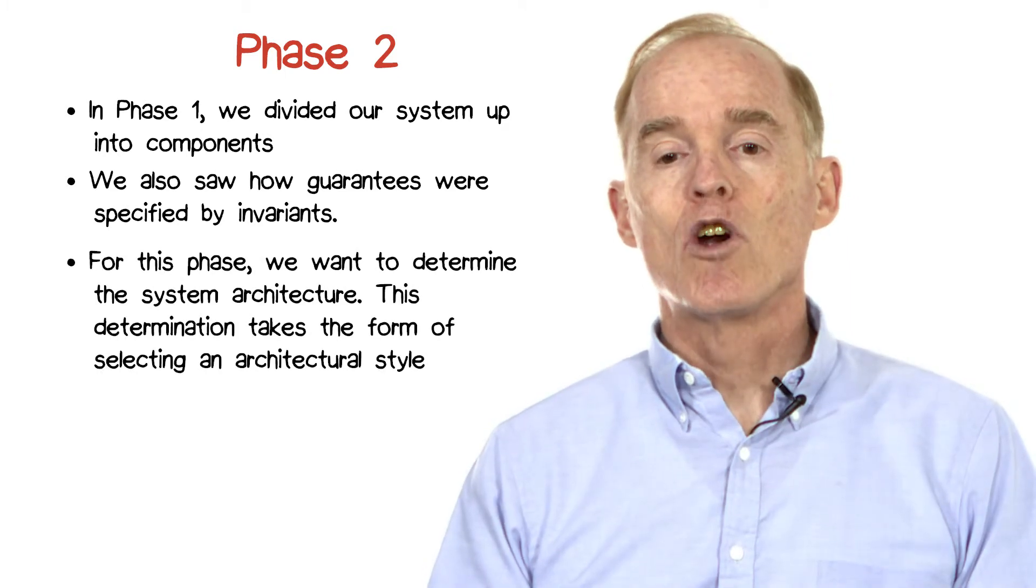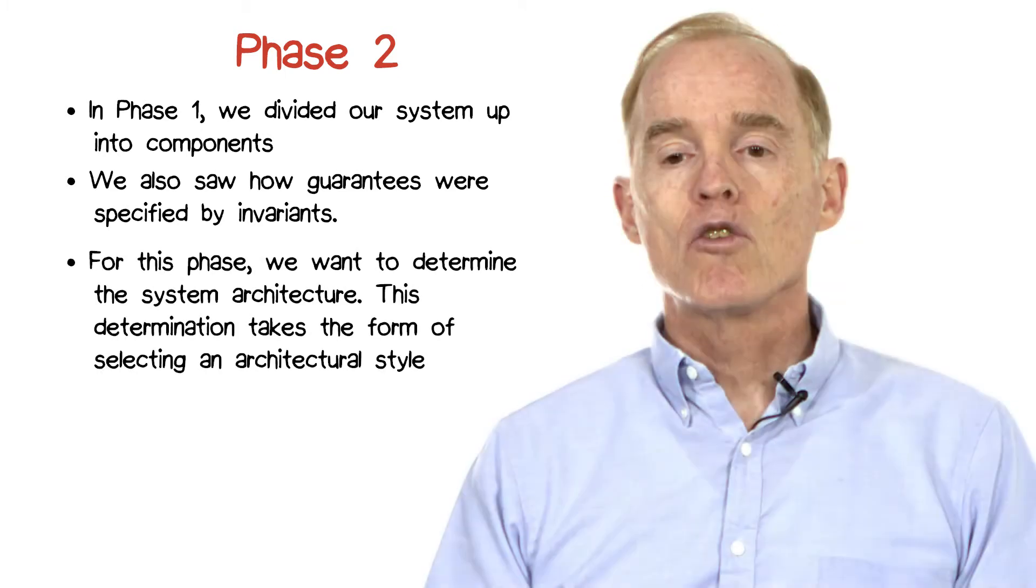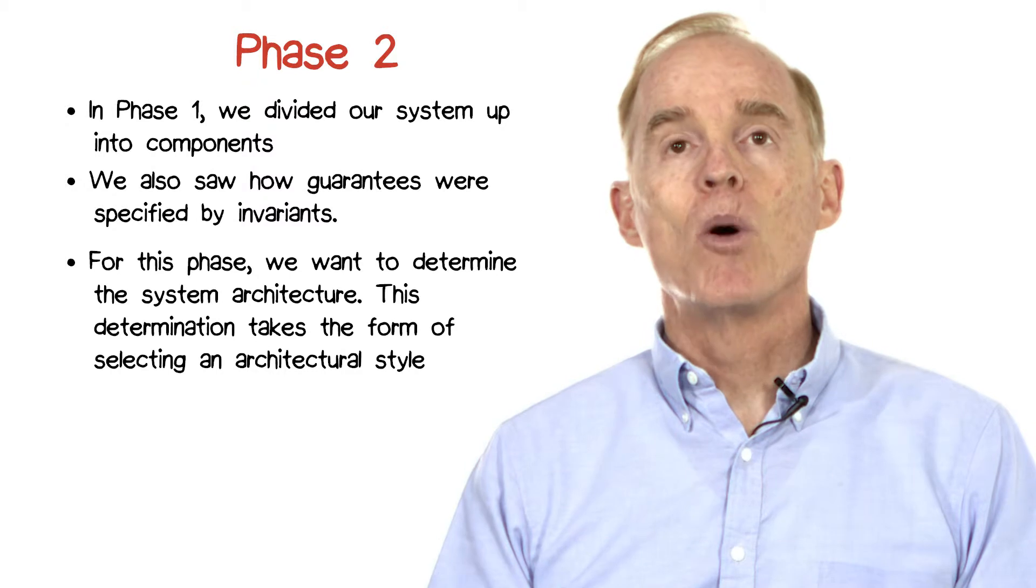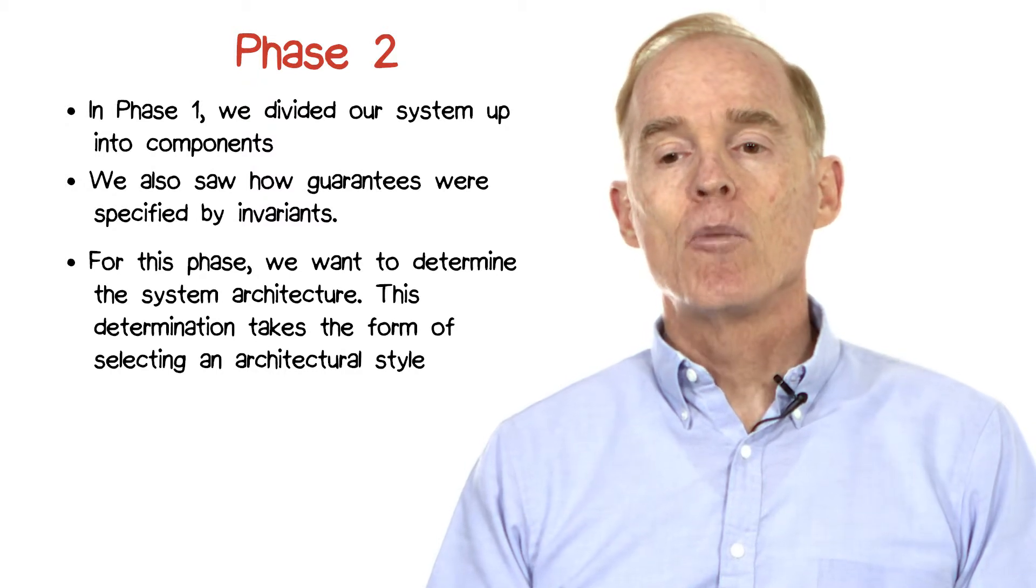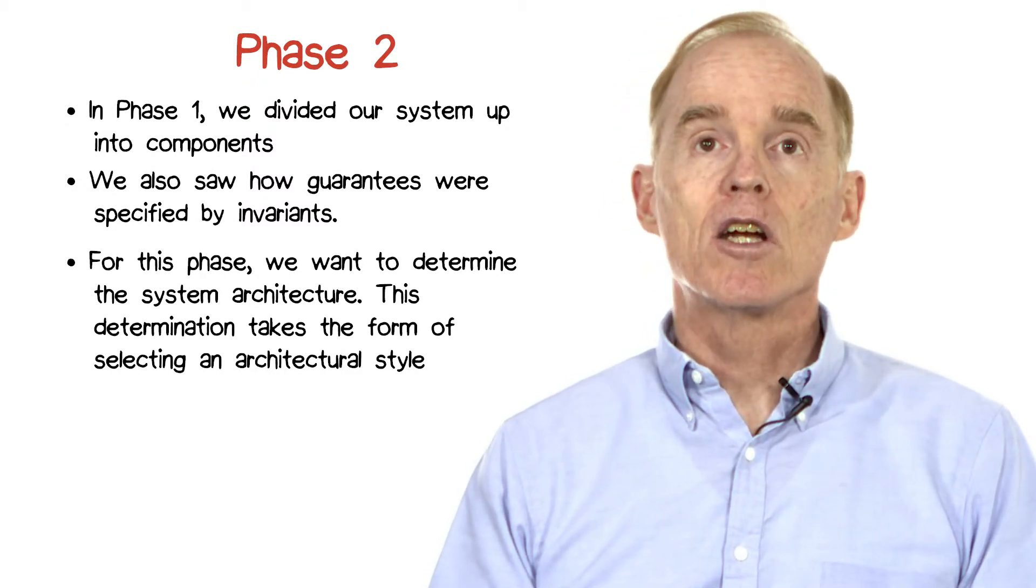For phase two, we want to determine the system's architecture. What this means is determining how the components will interact. This determination takes the form of selecting an architectural style.